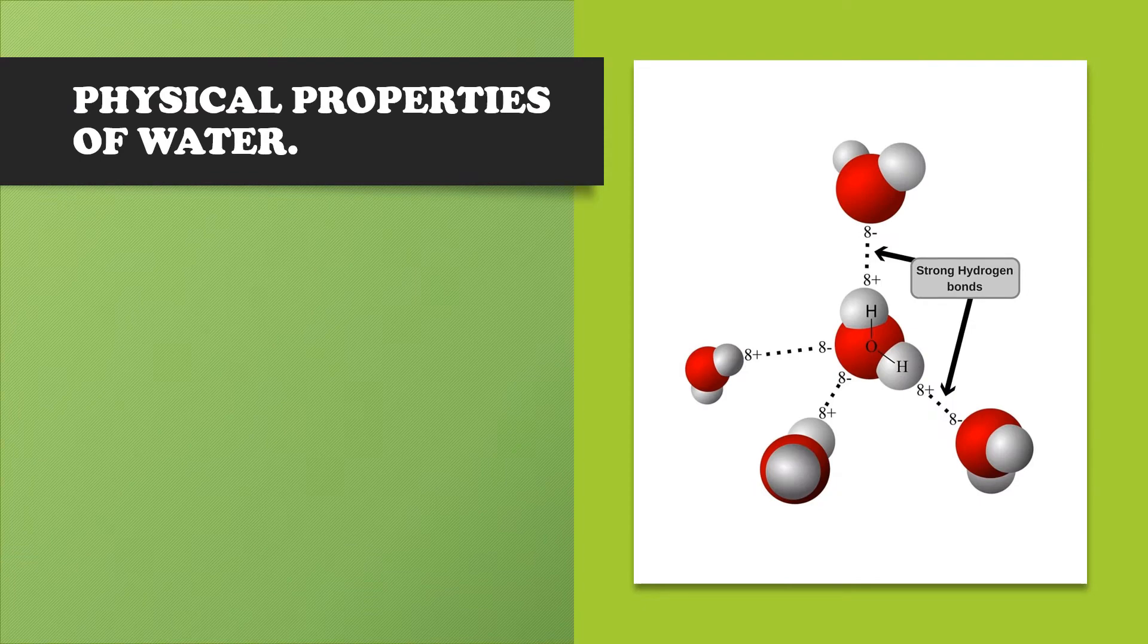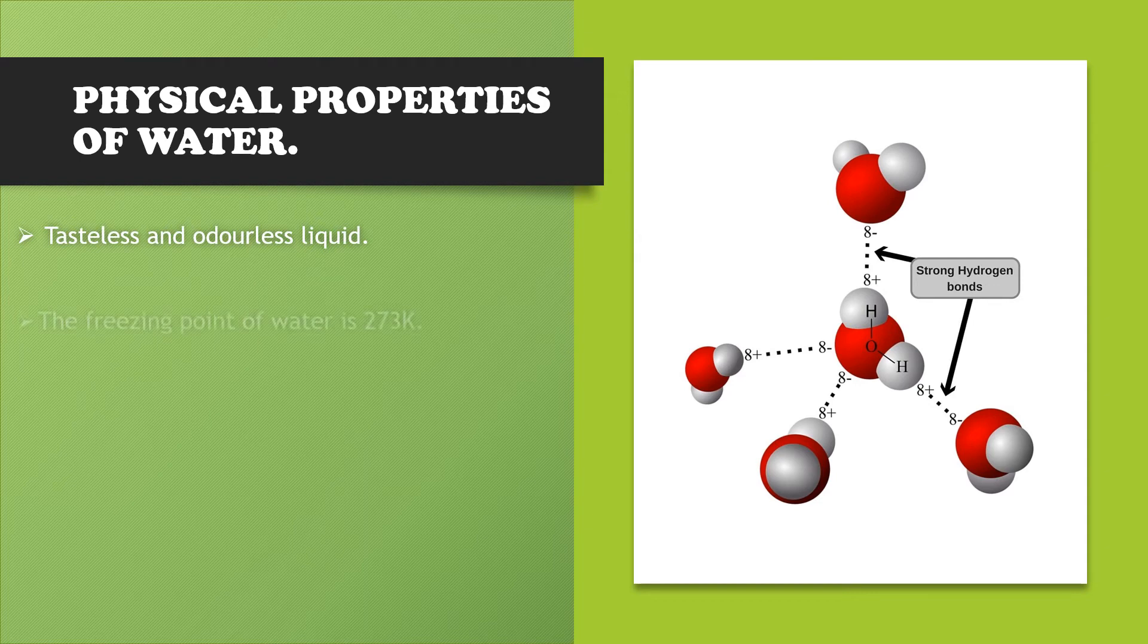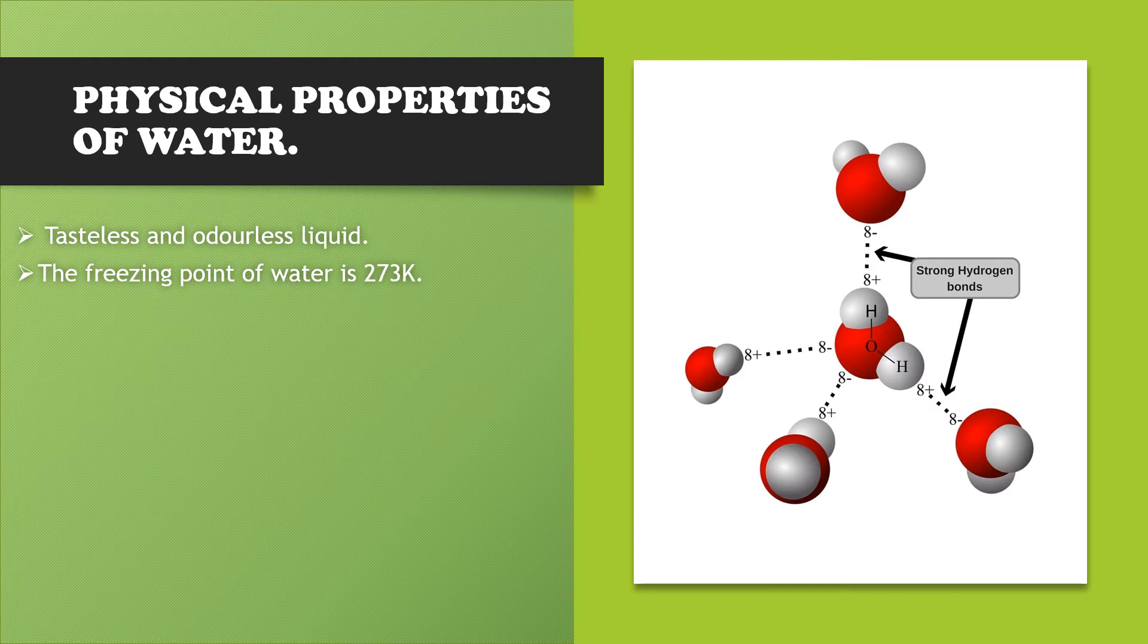Physical properties of water: Water is a tasteless and odorless liquid. The freezing point of water is 273 Kelvin. Its boiling point is 373 Kelvin. The density of water is 1 gram per centimeter cube at the temperature 298 Kelvin.